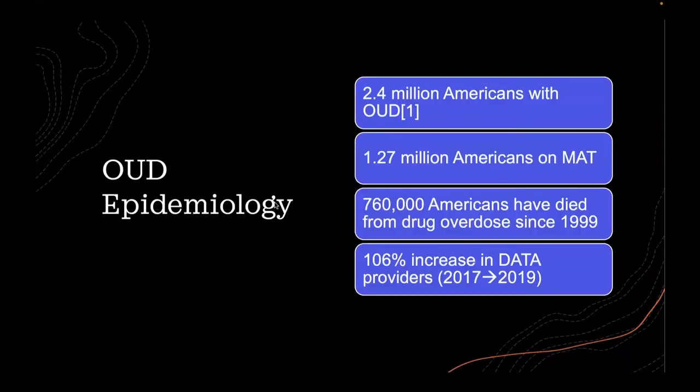So let's talk about the opioid use disorder epidemiology. We have 2.4 million Americans with OUD, according to the U.S. Department of Health and Human Services. Of that population, only 1.27 million Americans have been initiated on MAT, or medication-assisted therapy, including drugs like methadone, buprenorphine, or naltrexone. Since the year 1999, over 760,000 Americans have died due to drug overdose, which could have been prevented with adequate MAT therapy.